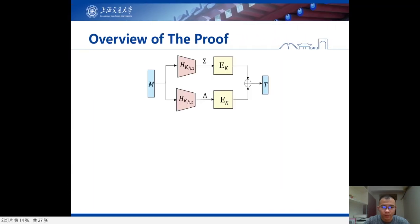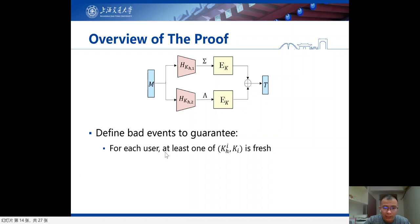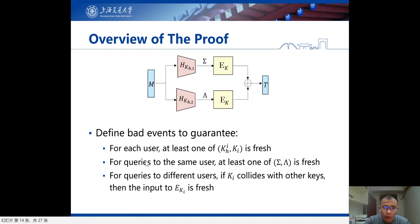Let's give an overview of our proof. Our proof relies on the H-coefficient technique. We define two classes of events: good events and bad events. For bad events, the goal is to guarantee that for each user, at least one of the hash key and block cipher key is fresh, and also to guarantee that for queries to the same user, if the block cipher key coincides with other keys, then the input to this block cipher should be fresh. After that, the analysis for the good events is relatively easy, and we refer the detailed proof to our paper.